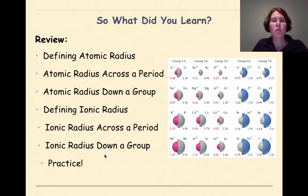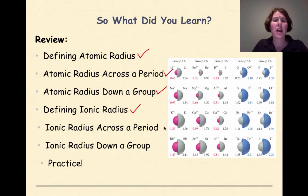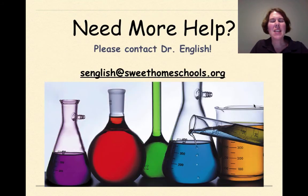What did you learn in this tutorial? We talked about the definition of atomic radius, the trend of atomic radius across the period and down a group, what ionic radius is, the trend of ionic radius across the period and down a group, and then we did a little bit of practice at the end. Need more help? Please feel free to contact me. Hope you have a great day.